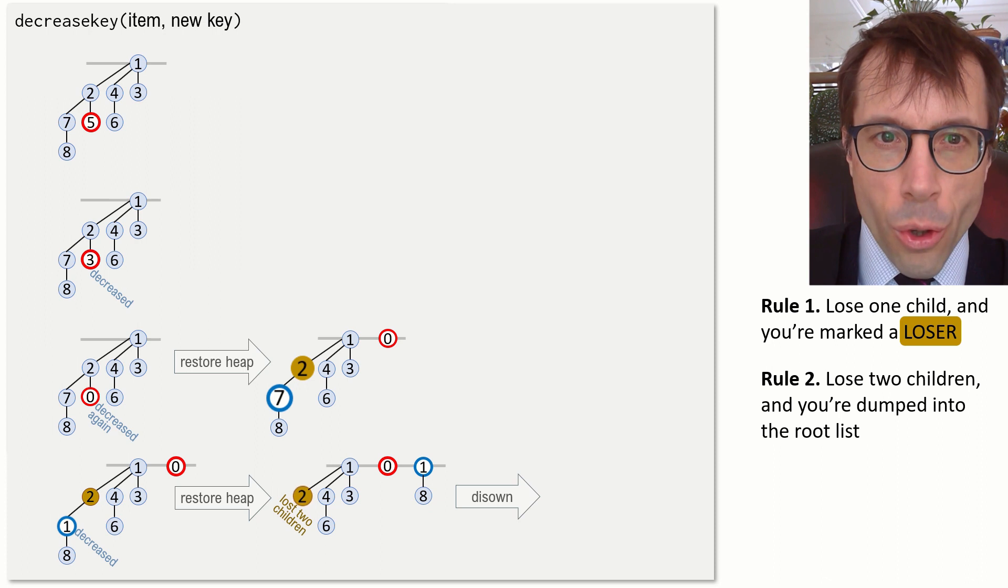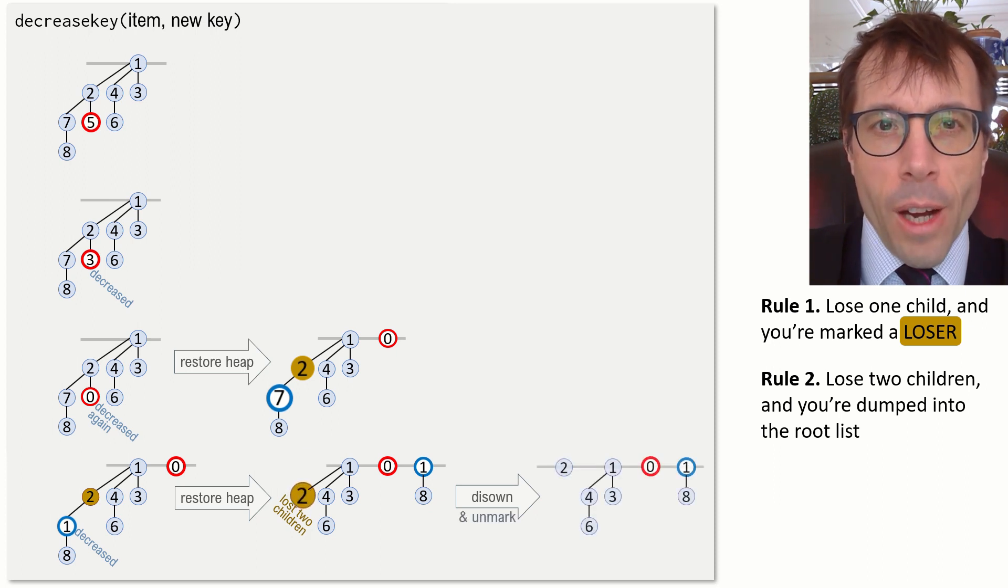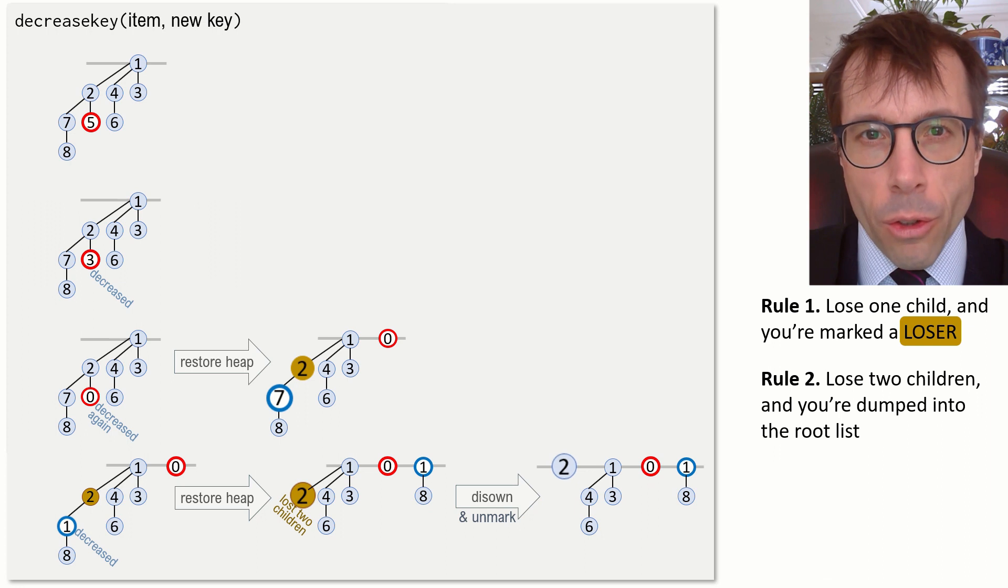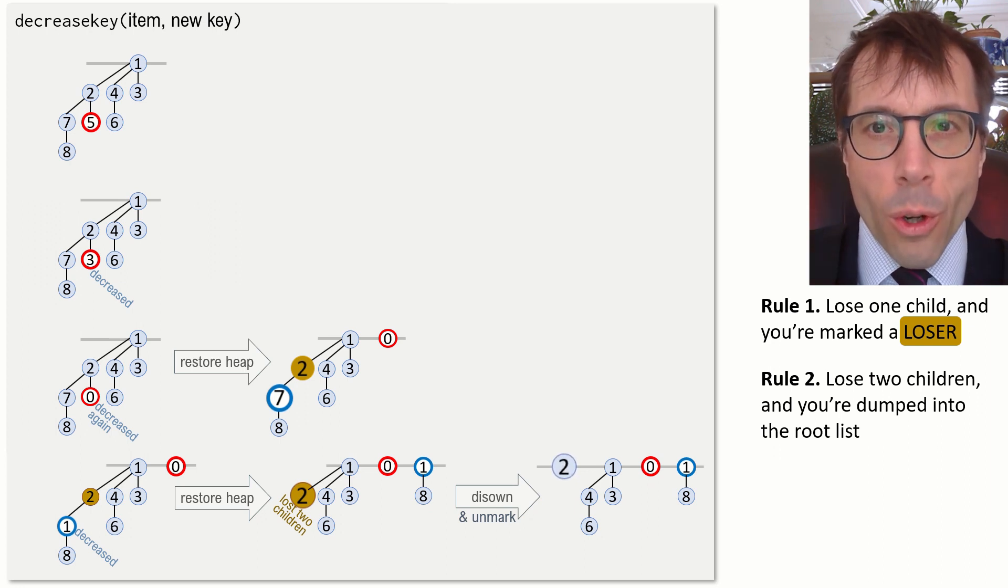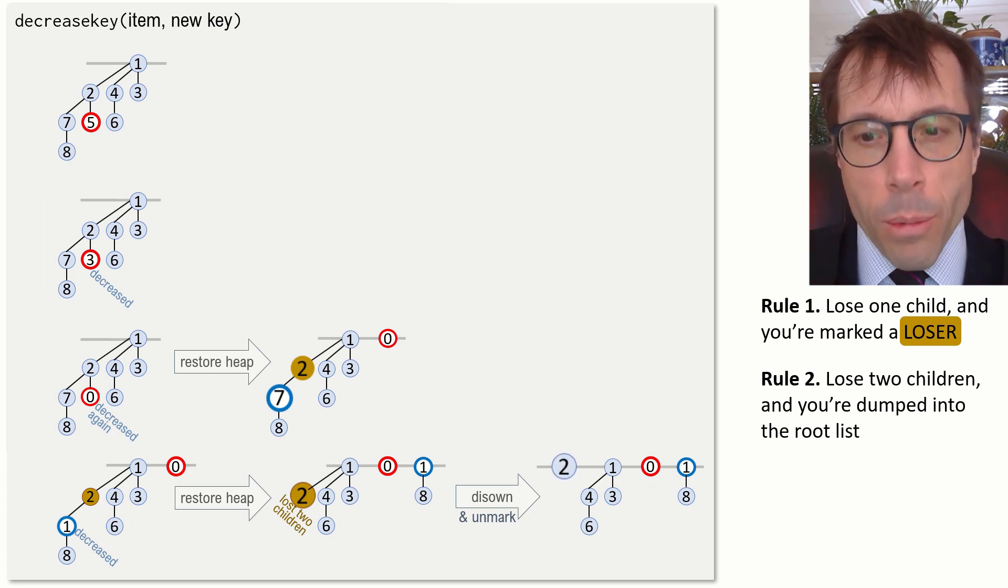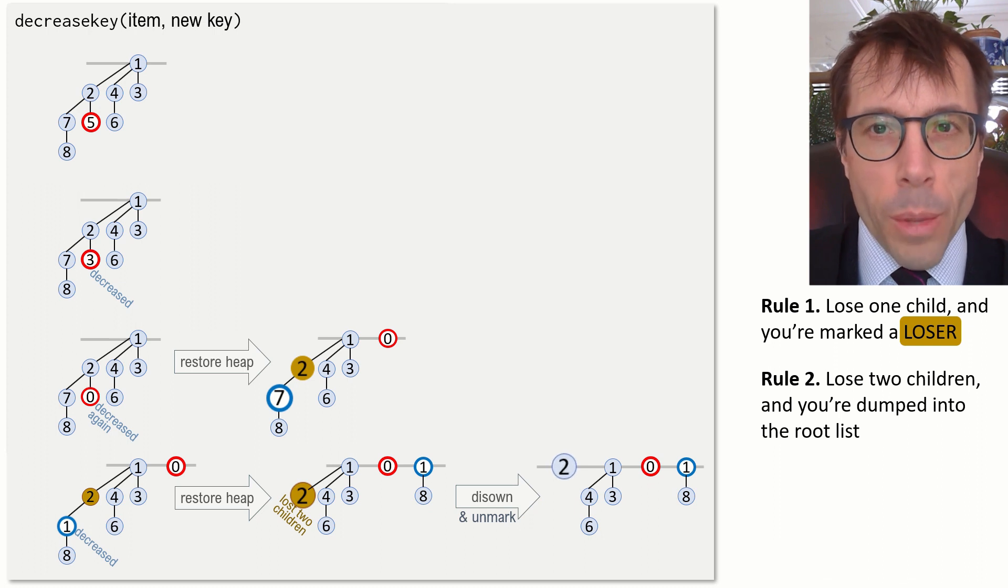But this node two, which was already marked as a loser, has now just lost a second child. So it's a double loser. And so its parent disowns it, and it's kicked into the root list. We're also going to make it so that everything in the root list is marked as a non-loser. And that's why when two got kicked into the root list, its flag was wiped clean. And that's why one has not been marked as a loser.